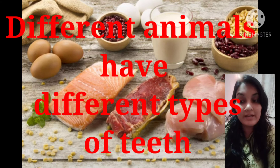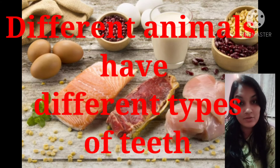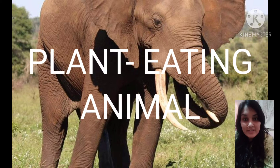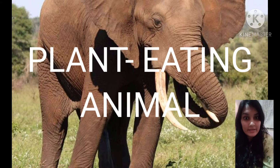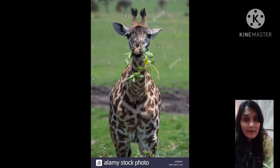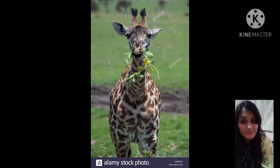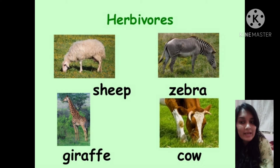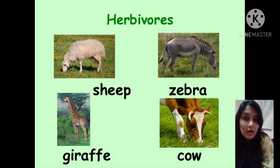Different animals have different kinds of teeth depending on the kind of food they eat. Plant eating animals like cow, buffalo, goat, sheep, giraffes and camel have sharp front teeth to cut the grass. They have broad and flat back teeth to chew their food. Plant eating animals are also called herbivores.